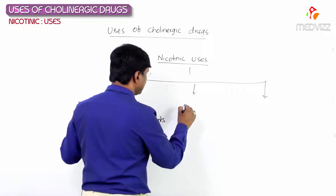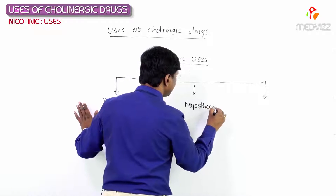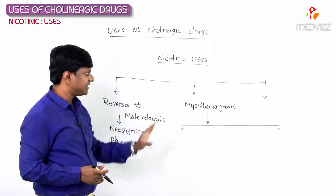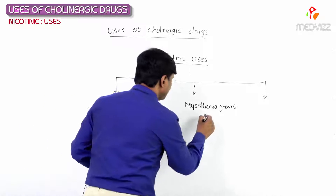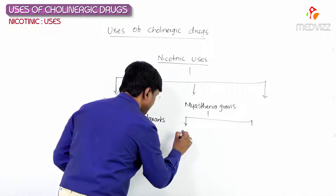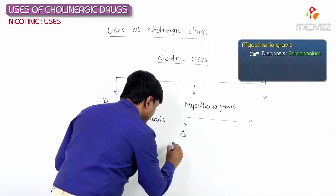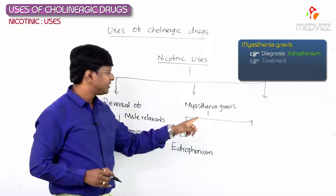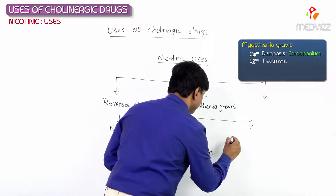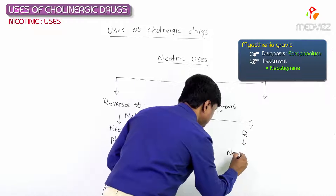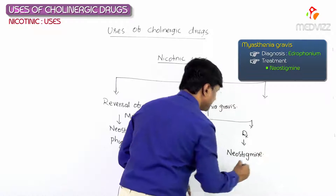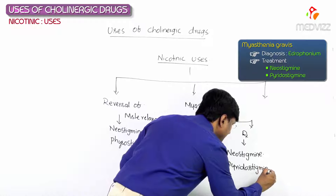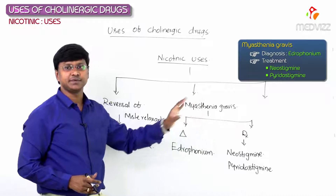The other nicotinic use is in myasthenia gravis, for both diagnostic and treatment purposes. For diagnosis of myasthenia gravis, the drug used is edrophonium — the edrophonium test. For treatment of myasthenia gravis, the drugs used are neostigmine and pyridostigmine.